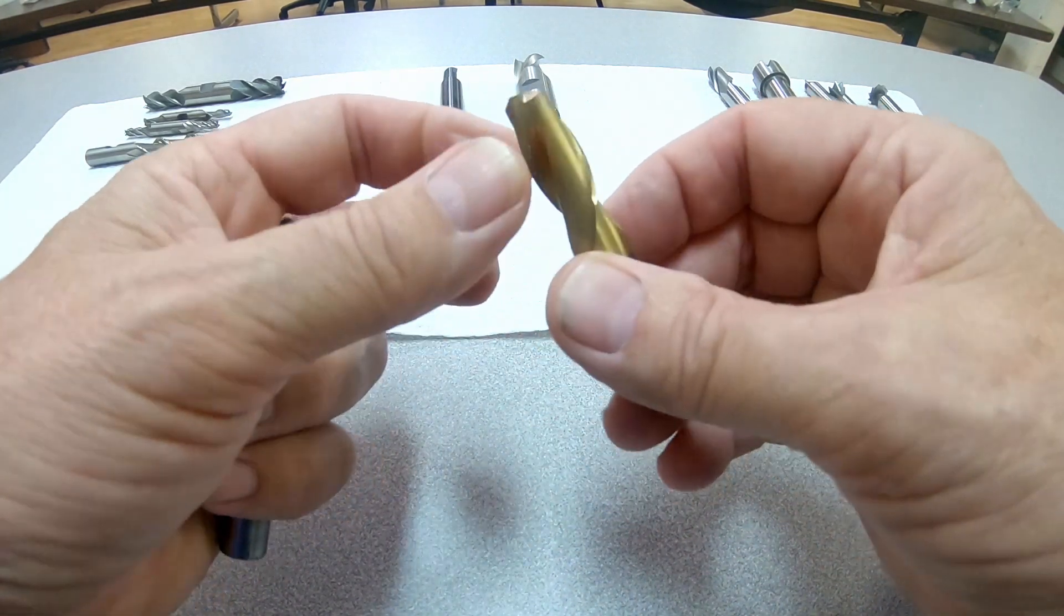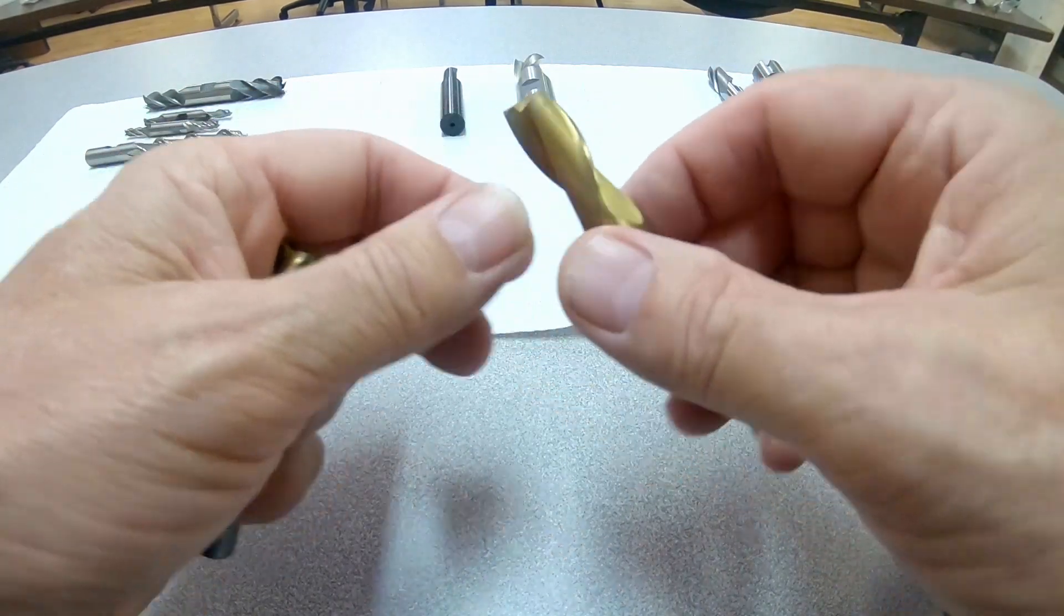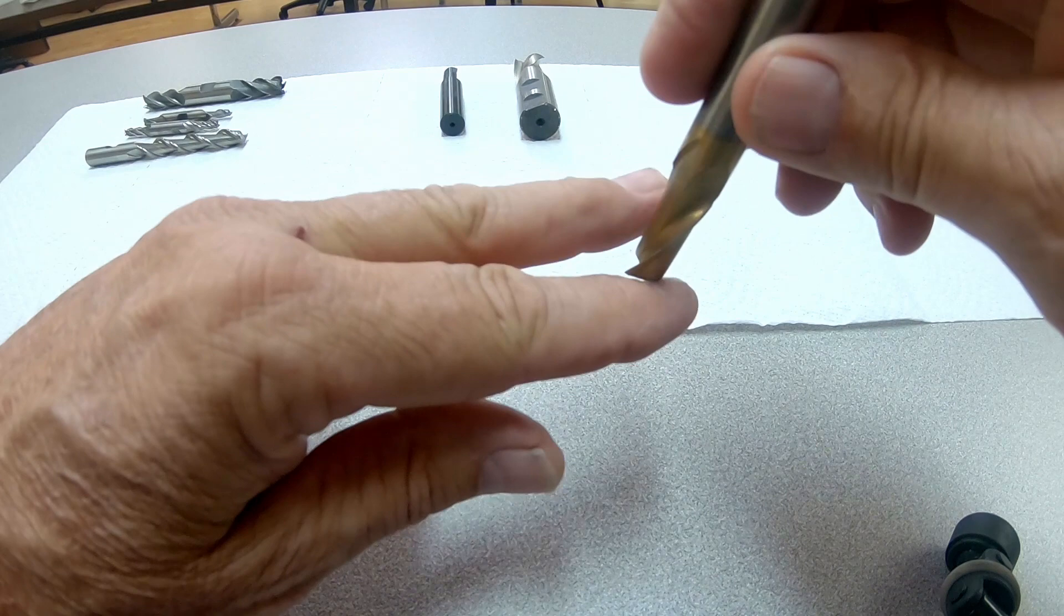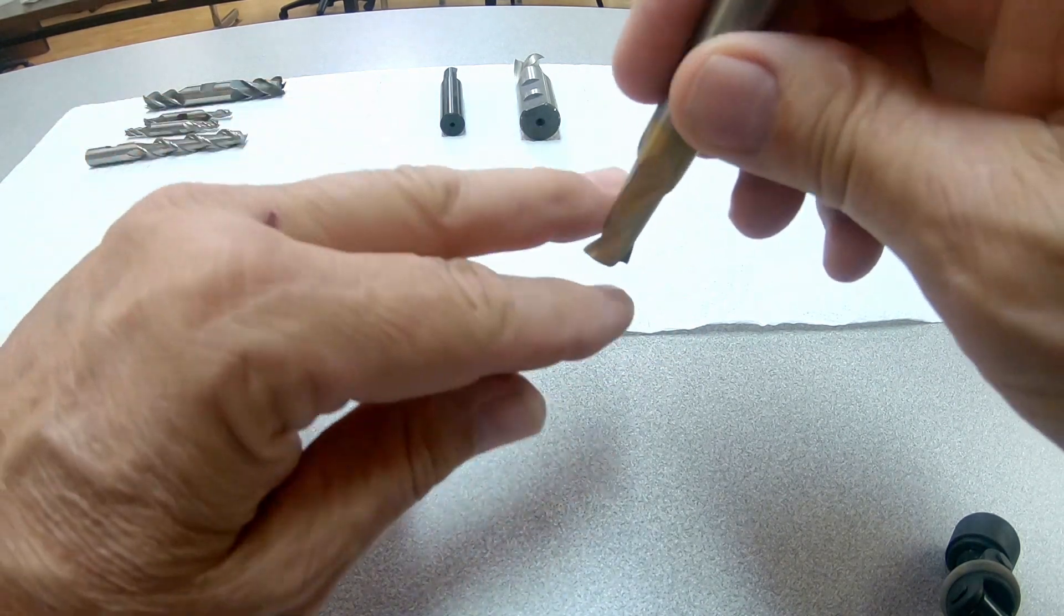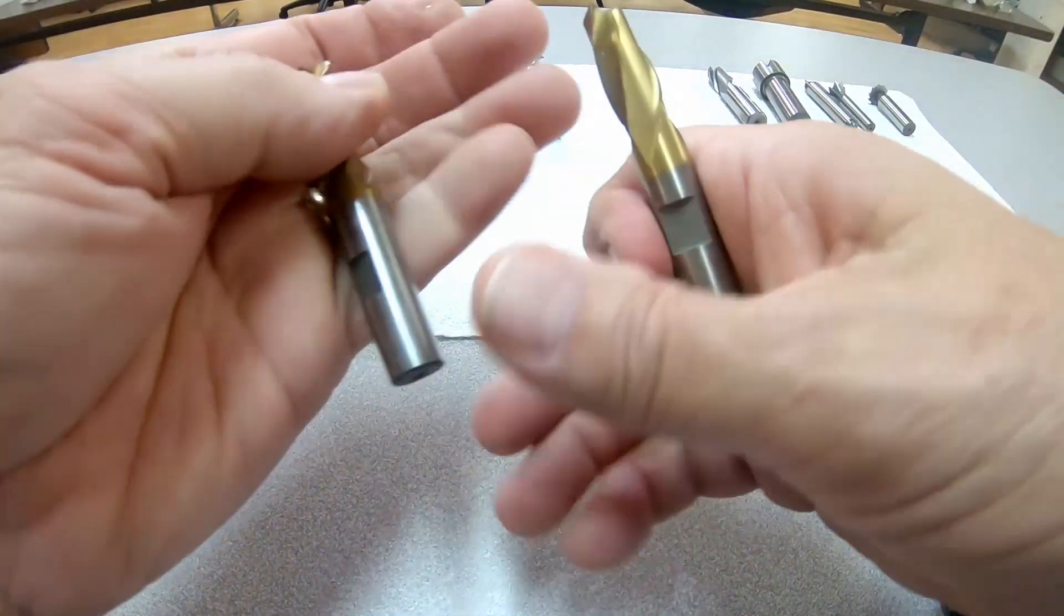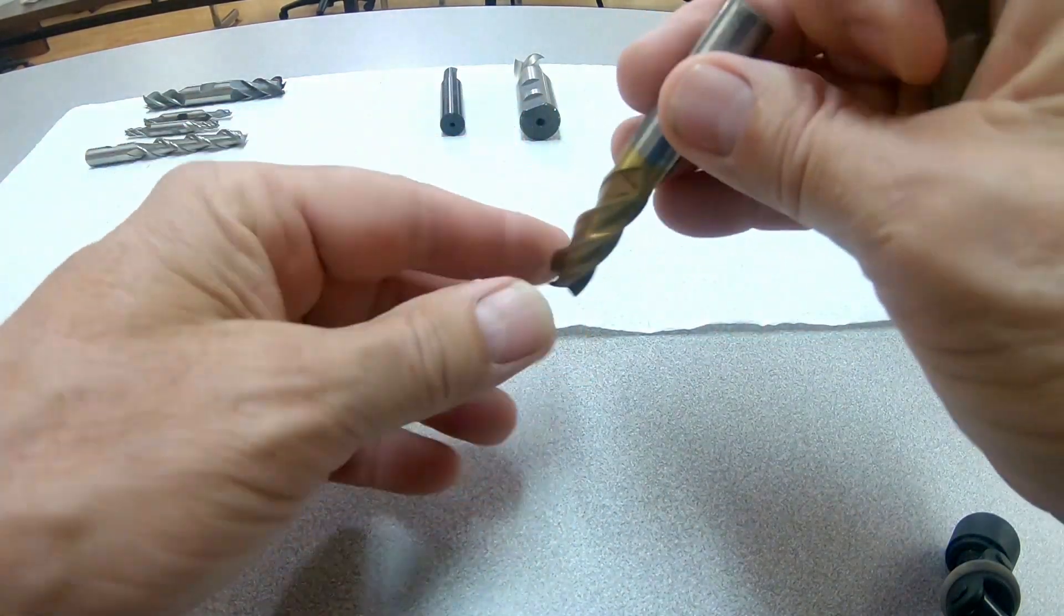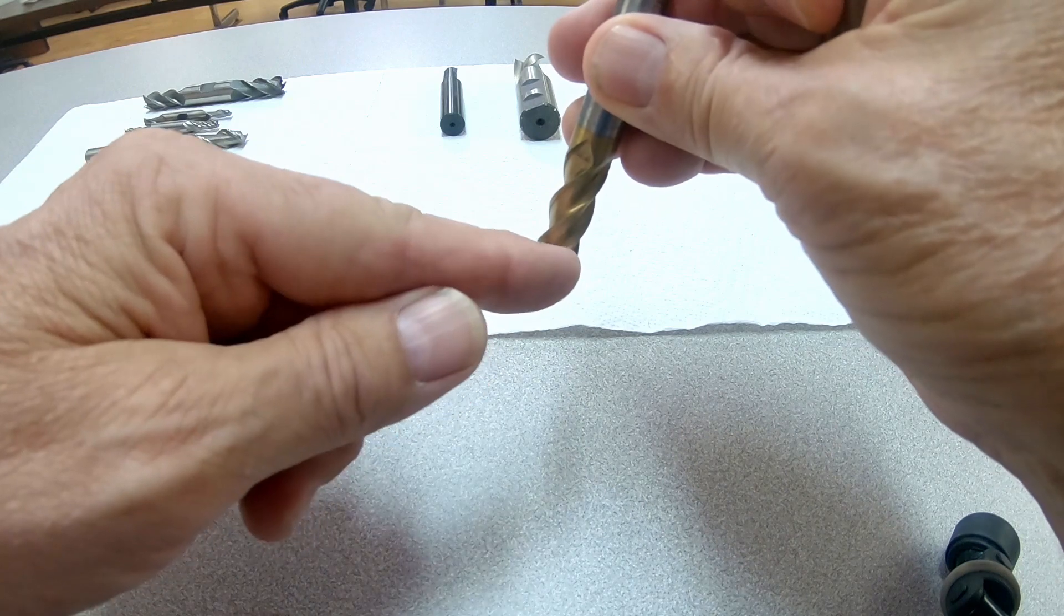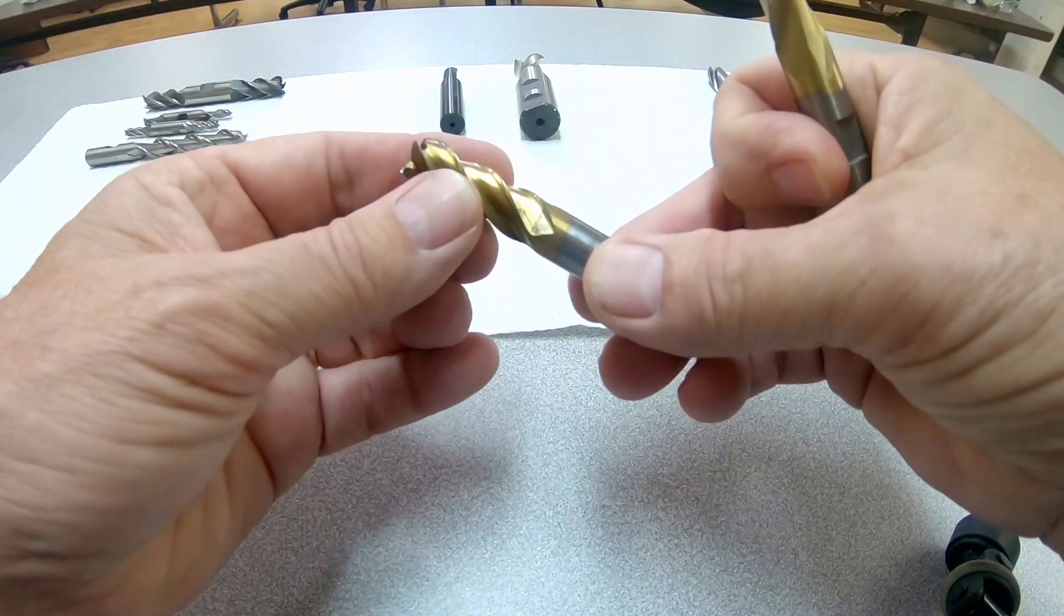Also, these are best where you're cutting a slot, because only one cutting edge will be cutting at a time. So it's less apt to chatter than a four flute. Four flute will actually be cutting on the front and on the side at the same time, so that can lead to more chatter.